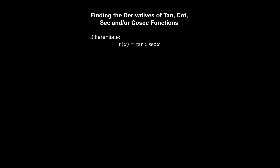Let's differentiate the product of two functions. We can either use trig identities and apply the quotient rule, or simply apply the product rule while remembering the derivatives of these functions, which we've evaluated previously. So by the product rule, we keep tan(x) constant and differentiate sec(x). That evaluates to sec(x)tan(x), and then we differentiate tan(x), which evaluates to sec²(x), and keep the second function constant. So this becomes sec³(x).